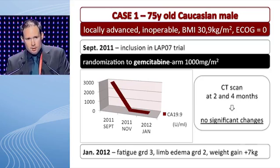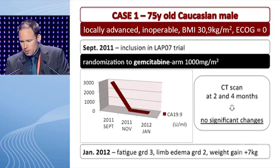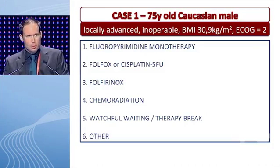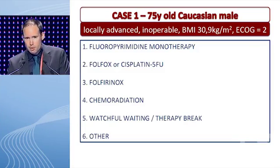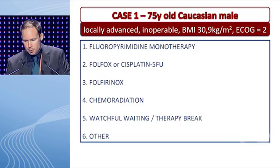His CT scan at two and four months of treatment showed no significant changes. However, his tumor marker CA 19.9 went down from 3,000 to about 37 units per milliliter. After four months of therapy, this patient developed grade 3 fatigue, grade 2 lymphedema, and a weight gain of about seven kilograms. So this patient is showing disease control under gemcitabine monotherapy, however experiencing some relevant side effects, mainly fatigue and peripheral edema. What would you recommend at this point?